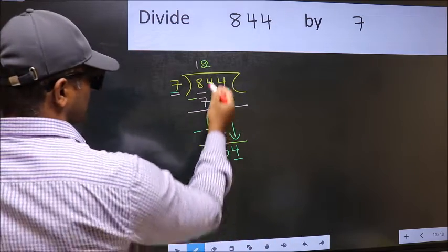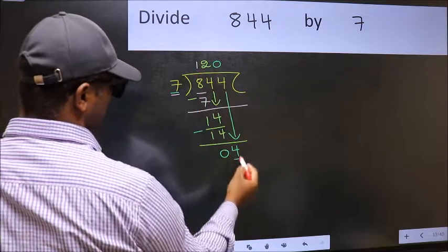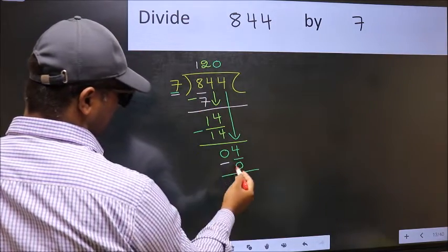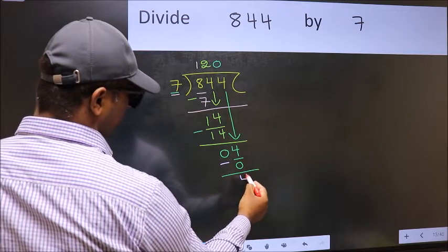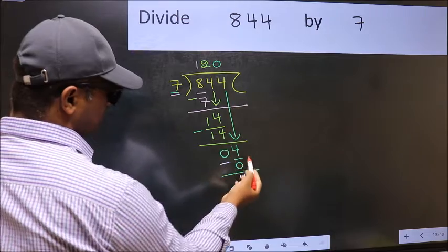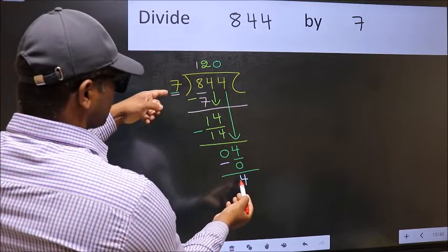So what we should do is take zero. So 7 into zero is zero. Now you should subtract: 4 minus zero is 4. Over here, we did not bring any number down, and 4 is smaller than 7.